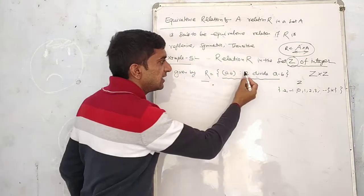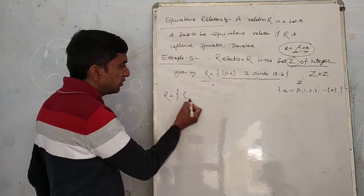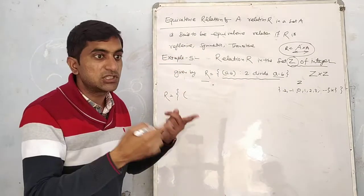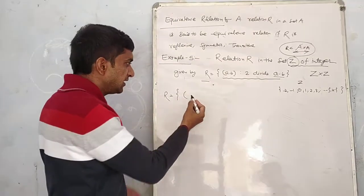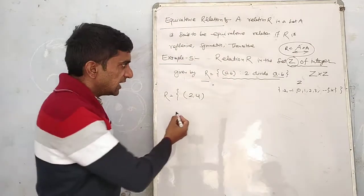So what is here? A, B, the ordered pair should be like this: if I subtract A from B then 2 divides it. For example, I have written here (2, 4). So what is the relationship?